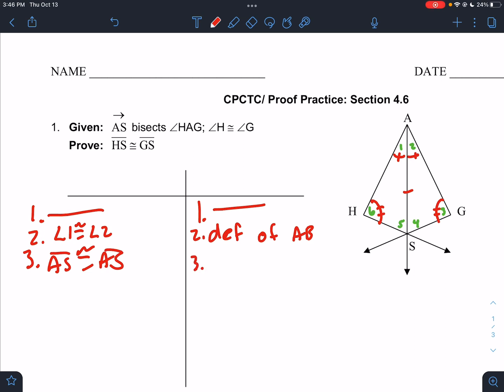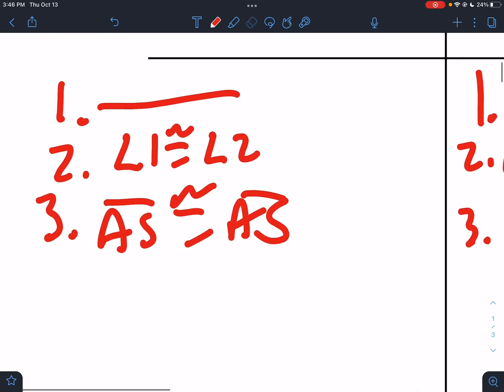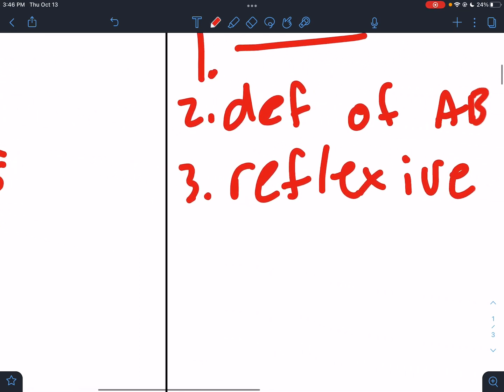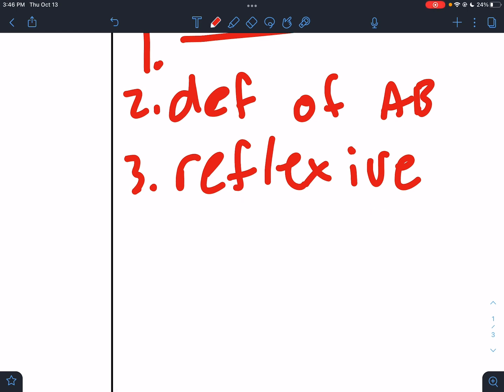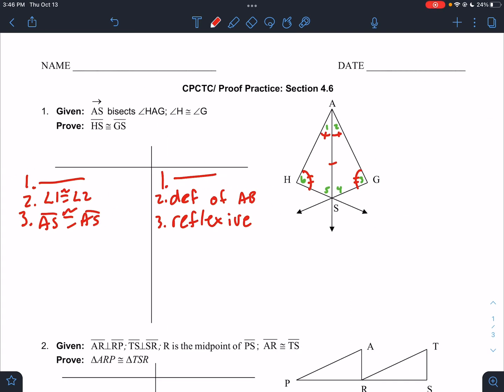And what is that reason? Well, we've talked about this some in class, but it's called the reflexive property. Reflexive just tells the reader, hey, both triangles use this piece. This is kind of a no-duh statement, right? AS is congruent to AS. Obviously, that's true. That's not super helpful in itself. But when we say reflexive, we're saying both triangles use AS. Therefore, it's one of our congruent sides.